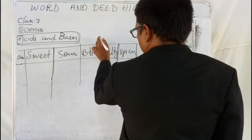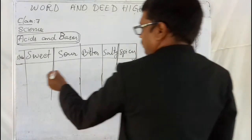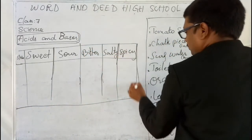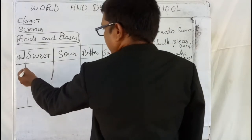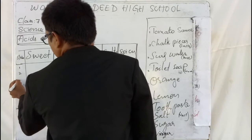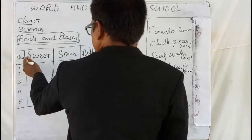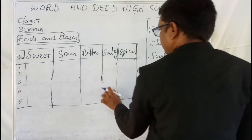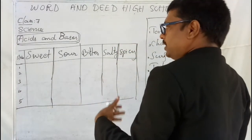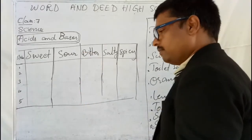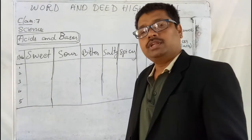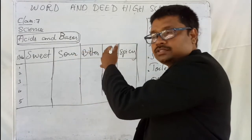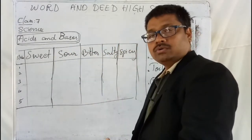I want you to draw this table in your notebook and write at least five food item names under each category: sweet, sour, bitter, salty, and spicy. After you make the table ready, I will explain in detail. If you feel any other tastes besides these five, just extend the list of tastes accordingly.